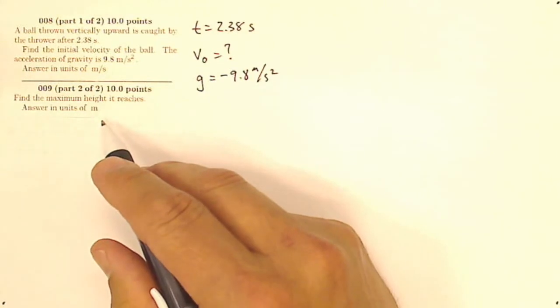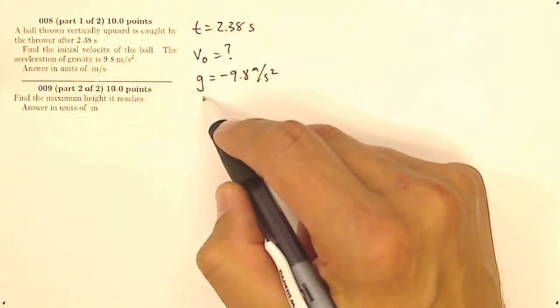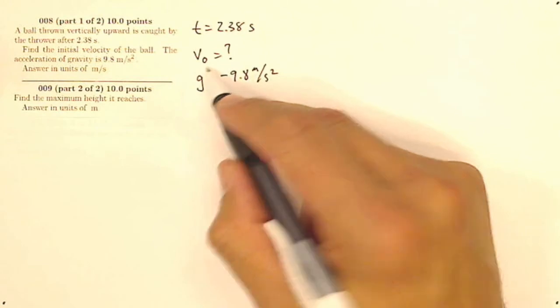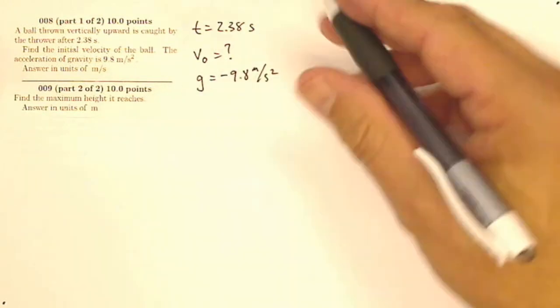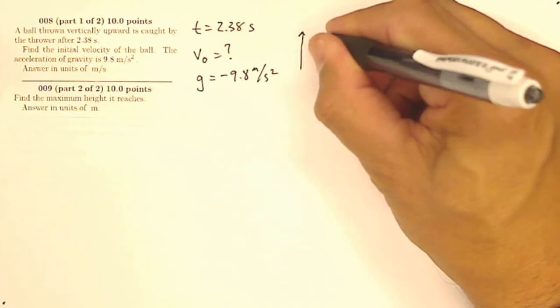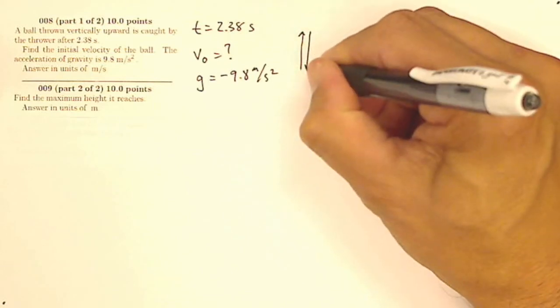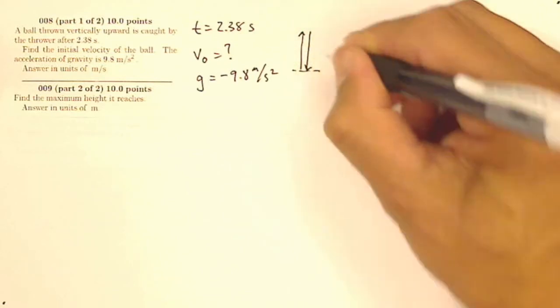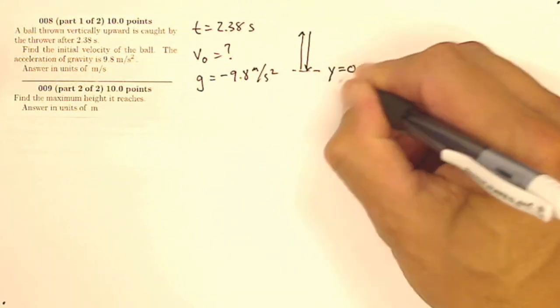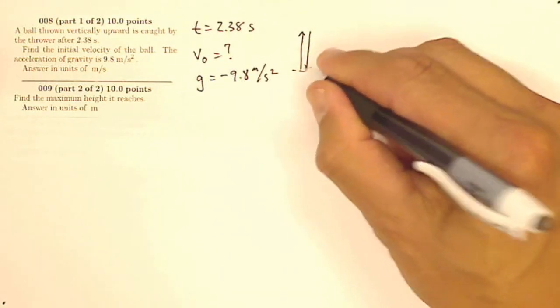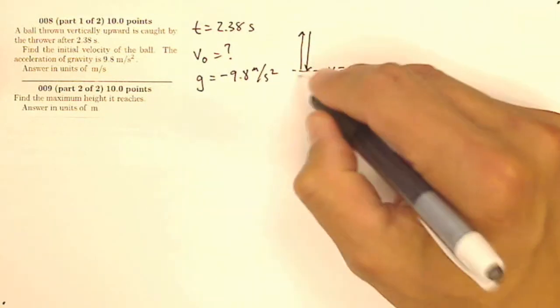Now it doesn't seem I have enough information here. I've got a time and gravity, and I'm looking for my initial velocity. But I'm missing something here. But what I know is that when I throw a ball up and it comes back down to its initial position, I know that my vertical displacement is 0. So I know that my displacement equals 0 because it's gone up and come back down to where it started. So displacement is 0 when you wind up where you started.